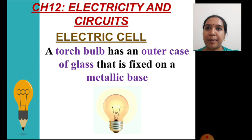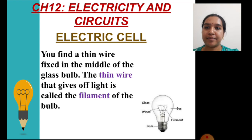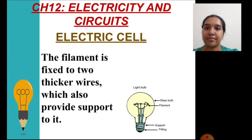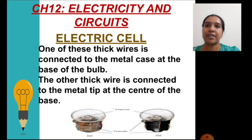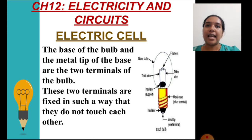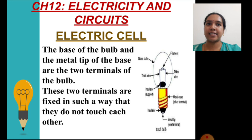Coming to the design of a torch bulb, it has an outer case of glass which is fixed on a metallic base. A thin wire fixed to the middle of the glass bulb is called the filament, and it is the one which usually gives off light. This filament is fixed to two thick supporting wires. One supporting wire is connected to the metal case at the base of the bulb, and the other supporting wire is connected to the metal tip at the center of the base of the bulb. The two terminals of the bulb are at the base of the bulb and the metal tip of the base, which are separated by insulators as you can see in the image.